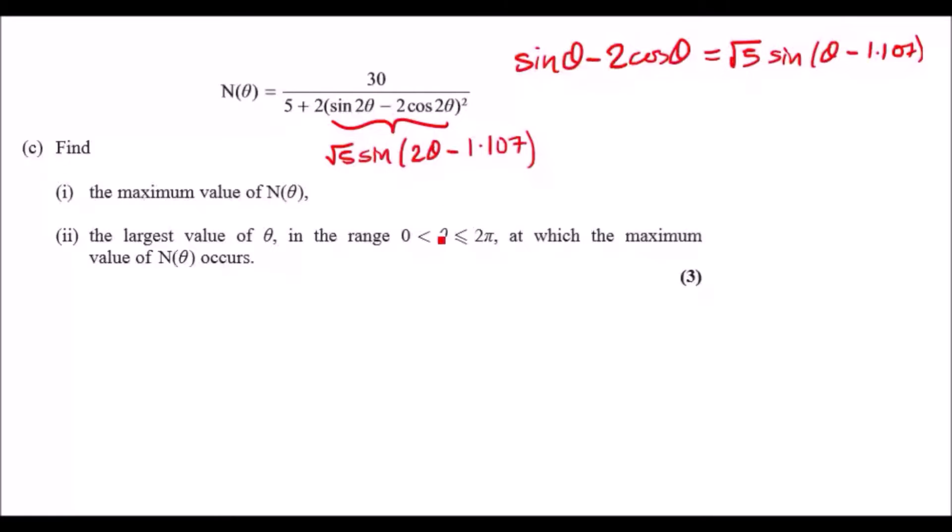Now to maximize this, just like the previous one, we just have to ask ourselves what value of sine can we take. Well, since we know this is just a regular sine with whatever inside, it's gonna go between minus one and one.